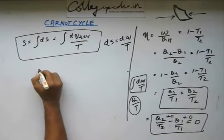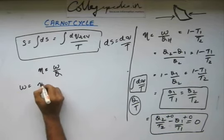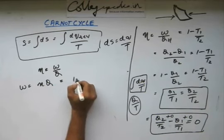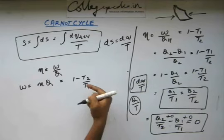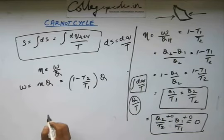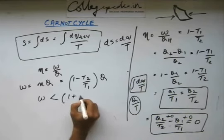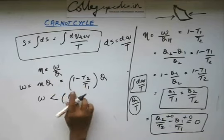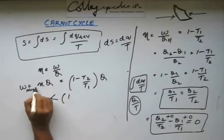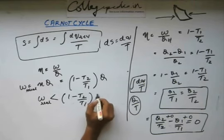Efficiency equals work done divided by heat given, so work equals efficiency times heat given. For the Carnot cycle, efficiency is 1 minus T_low / T_high, so work = (1 - T2/T1) × Q_in. But practically, the real work done is going to be less than this ideal work. So for a real engine, the actual work is less than the ideal Carnot work.